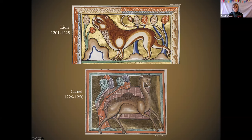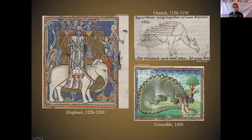Then you have your exotic animals such as lions and camels — beasts that might be mentioned in the Bible or known by travelers, merchants, or crusaders, or even kept in menageries by kings, but not seen by ordinary European people under ordinary circumstances. And there were even more exotic animals like elephants, crocodiles, creatures from India, and eventually, as we get into the Renaissance, creatures from the Americas.